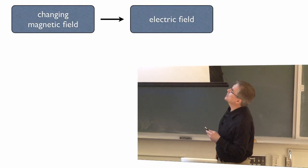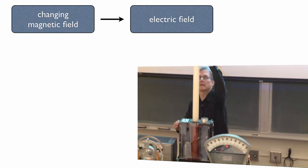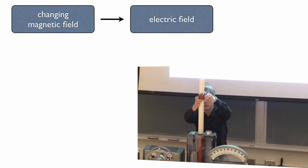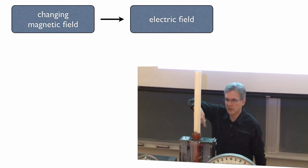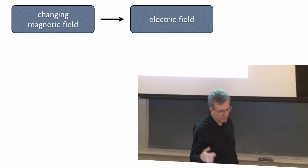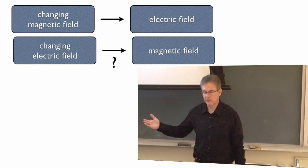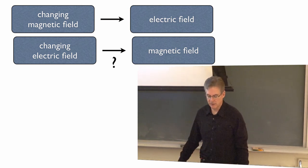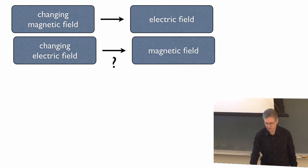So we've seen now that if you have a changing magnetic field that creates an electric field. We saw that with this. I mean we wouldn't be able to light up that light if there weren't a changing electric field inside the coil driving that current. So you can logically ask, what if you have a changing electric field? Does that give you a magnetic field? Turns out it does, it actually does.